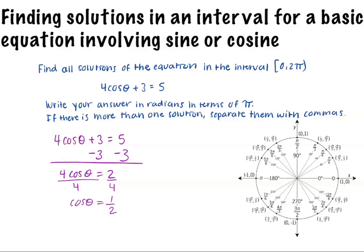Would the angle be π over 3? Yes, you are correct. However, the cosine of 5π over 3 is also 1 half.